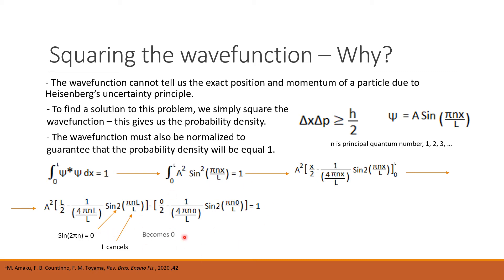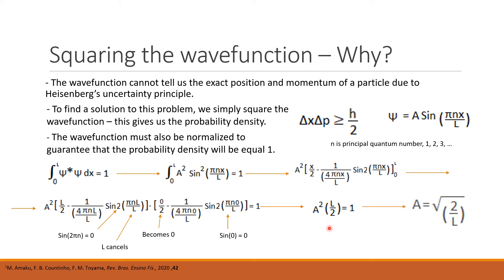Dealing with this side, zero over two becomes zero, and this is multiplied by zero, so we're left with sine(0) which equals zero. That simplifies down quite nicely into this little expression: A² × L/2 = 1. Solving for A, here is our normalization constant.